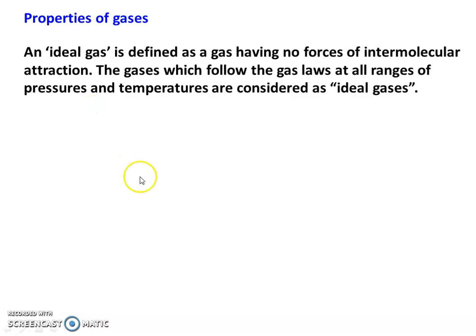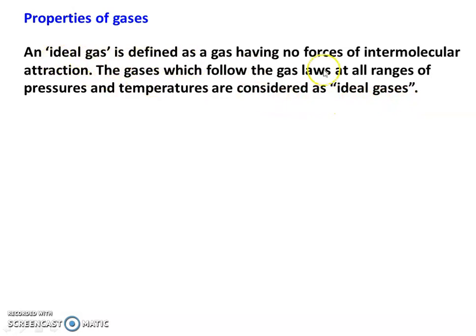We are going to compare Ideal and Real Gases. An Ideal Gas is defined as a gas having no force of intermolecular attraction. The gases which follow the gas laws at all range of pressure and temperature are considered as Ideal Gases. In Ideal Gases, there is no intermolecular force.